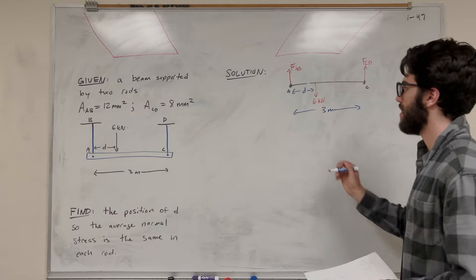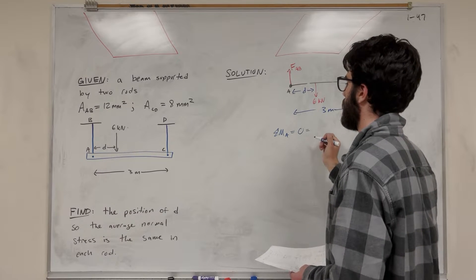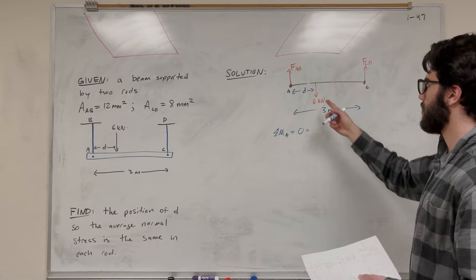So let's take a moment. How about we take the sum of the moments around A. It's equal to zero because we're at equilibrium. So what's it going to be? Well,